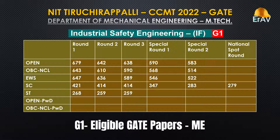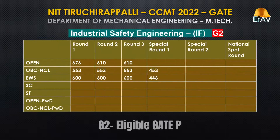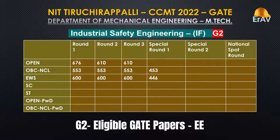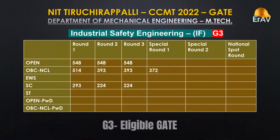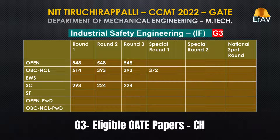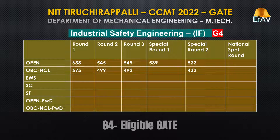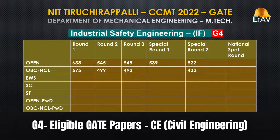Industrial Automation continued — Group 3: Eligible GATE Papers: CH. Group 4: Eligible GATE Papers: Civil Engineering (CE).